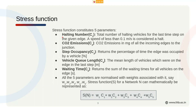The stress function is a linear combination of five parameters: the halting number — the number of vehicles stopped or moving at less than 0.1 meters per second — CO2 emissions of all edges at that junction, step occupancy or the proportion of the edge occupied by a vehicle, queue length or the average length of all vehicles at that edge, and waiting time — the sum of waiting times for all vehicles on the edge. We add a weight parameter W to each, normalize them, and get the stress function S.